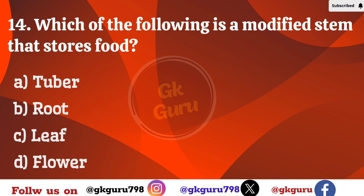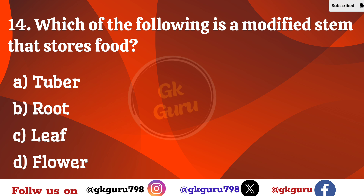14th question: Which of the following is a modified stem that stores food? Option A: tuber. Option B: root. Option C: leaf. Option D: flower.